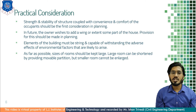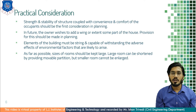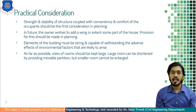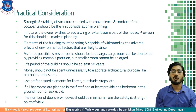Elements of the building must be strong and capable of withstanding the adverse effects of environmental factors that are likely to arise, like earthquake, tsunami, high tides, or high winds which damage property. So the building has to be designed to face environmental problems. As far as possible the size of rooms should be kept large — a large room can be shortened by providing movable partitions but a smaller room cannot be enlarged. The life period of the building should be at least 50 years. Money should not be spent unnecessarily on elaborate architectural purposes like balconies, arches, porch, and cornices.